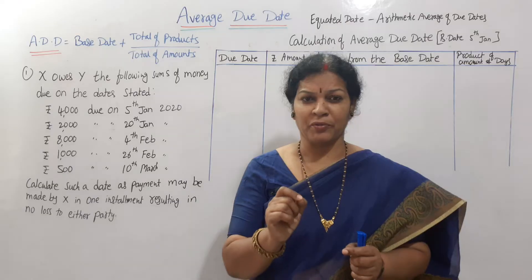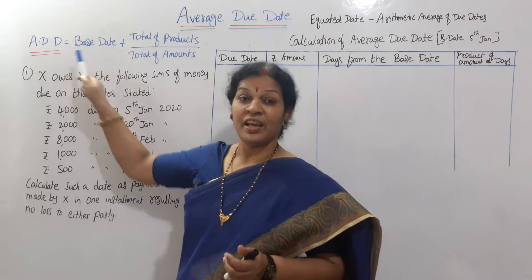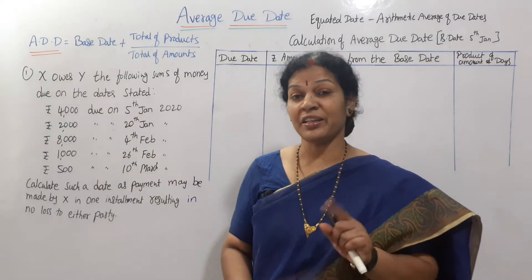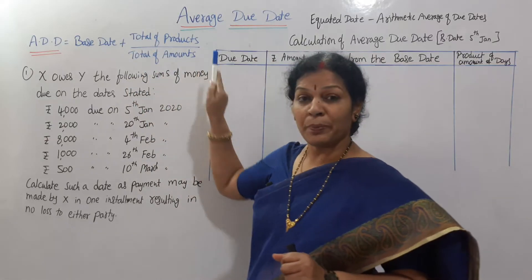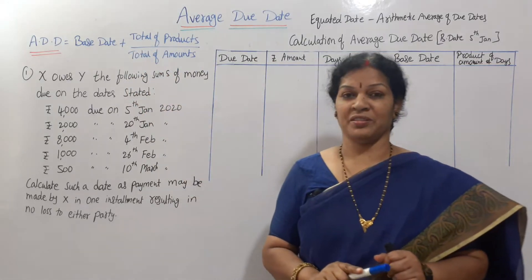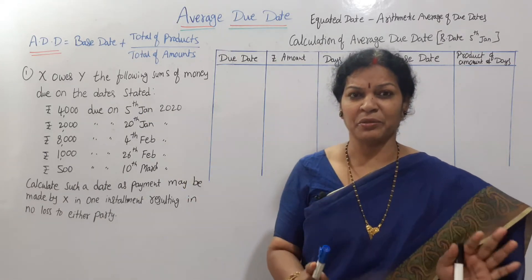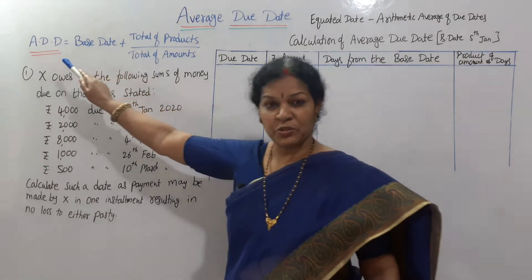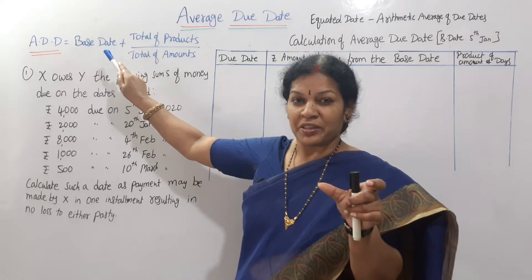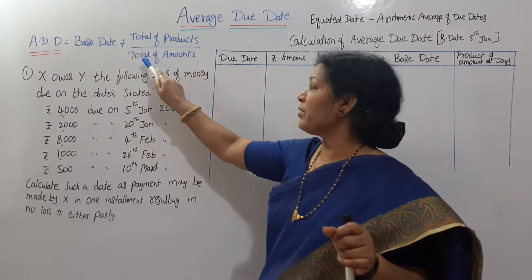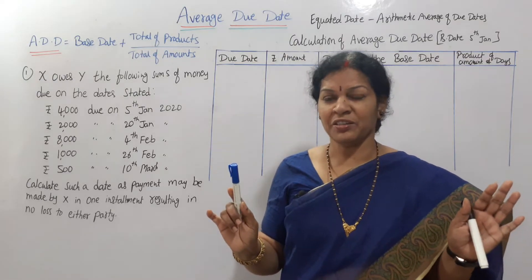Today we'll see one simple problem. Before going to that problem, you have to remember one simple formula. Average Due Date formula: Average Due Date equals base date plus total products divided by total amounts. Through a problem I'll explain how it is useful. Right now remember this formula — Average Due Date equals base date plus total products divided by total amounts.